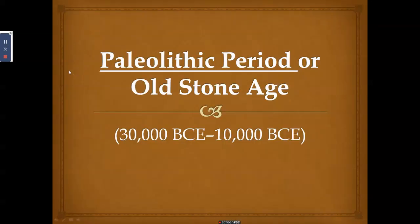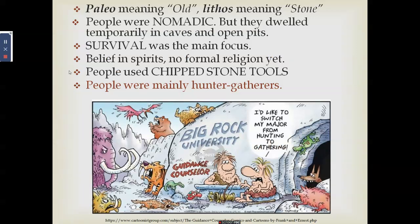The Old Stone Age, or Paleolithic period, spans from 30,000 BCE to 10,000 BCE. The word comes from 'paleo' meaning old and 'lithos' meaning stone. People of this time were nomadic, moving from place to place depending on the availability of food and resources. They dwelled in temporary caves and open pits. Their main focus was survival, and while there was no formal religion, they believed in spirits.